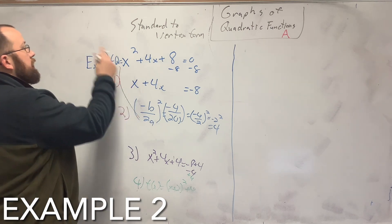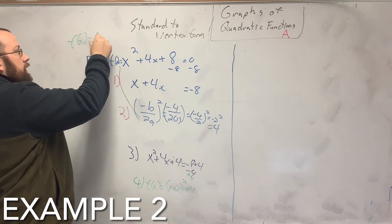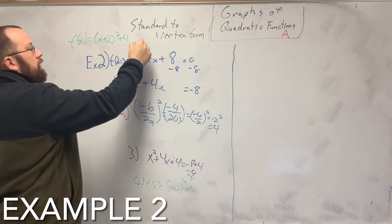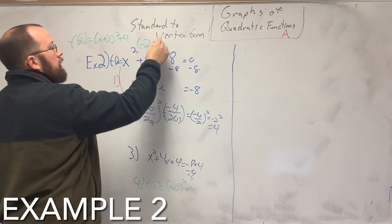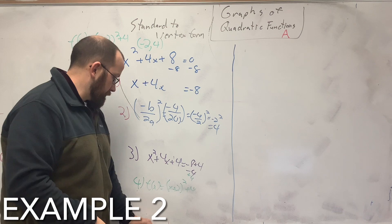So your vertex form of this is f(x) equals x plus 2 squared plus 4, and negative 4 is your vertex of that. Now we're going to go back the other way. But that's how you do that.